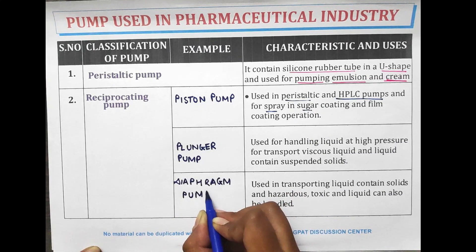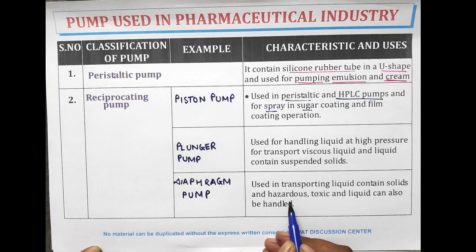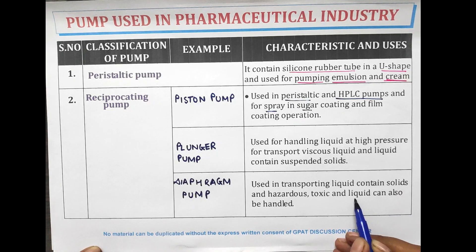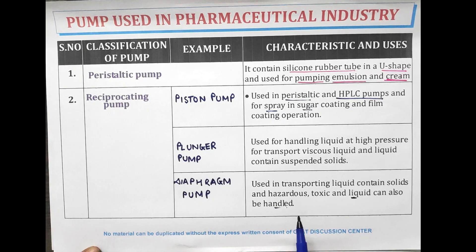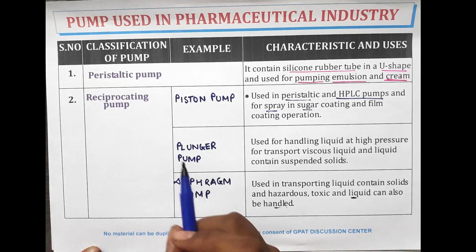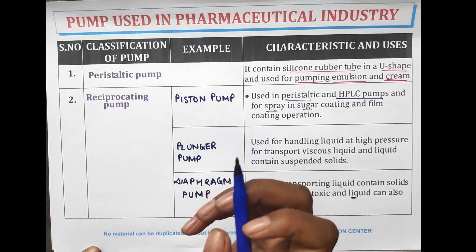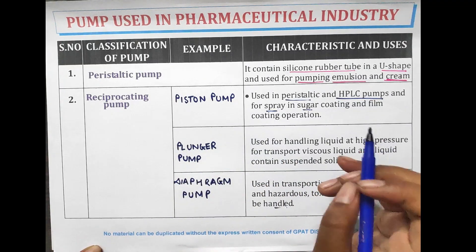The diaphragm pump is used for transporting liquids containing solid and hazardous or toxic substances. The liquid in this pump can be easily handled. These were the types of peristaltic and reciprocating pumps.